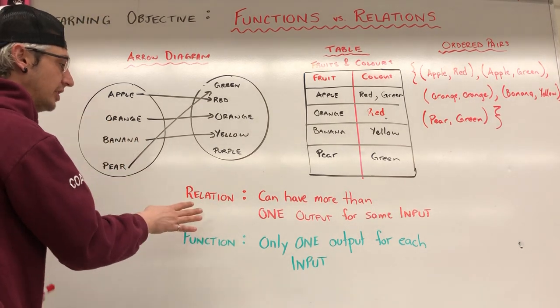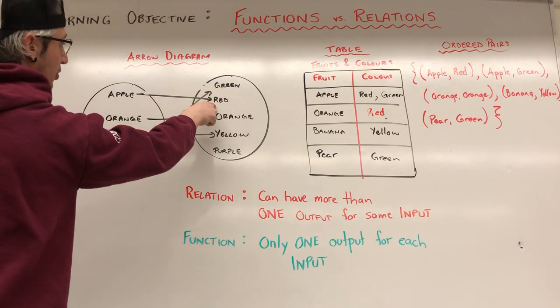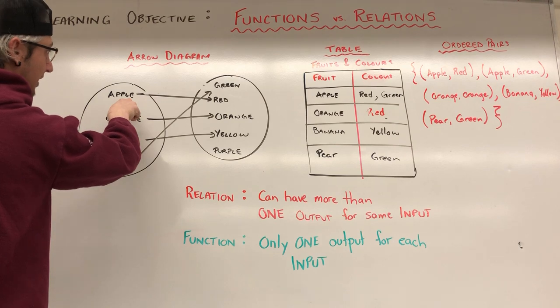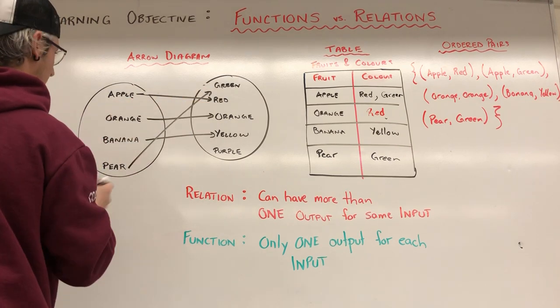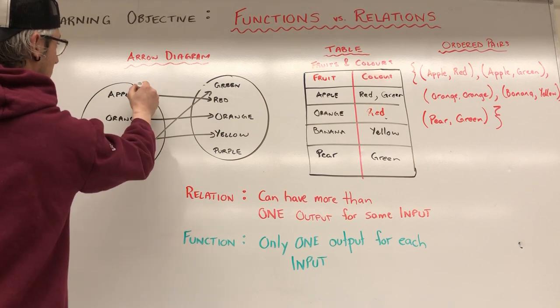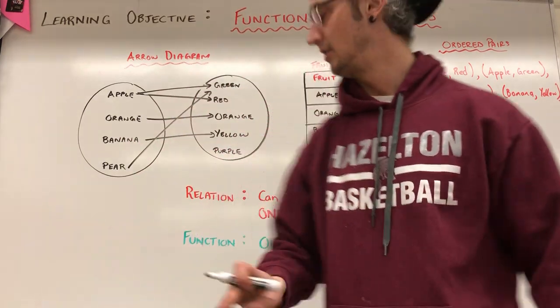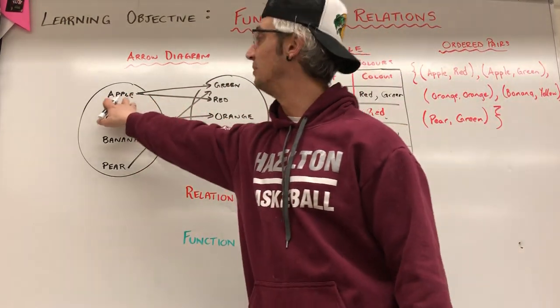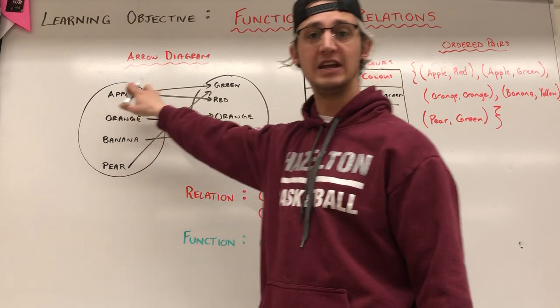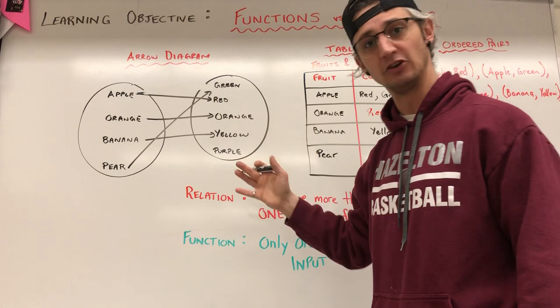In a relation, any relation, we can have more than one output for the same input. So apple can be green, or it can be red. But for it to be a function, we can only have one output for a specific input. So an apple can only have one output. And we'll say it's red. That's what makes it a function.